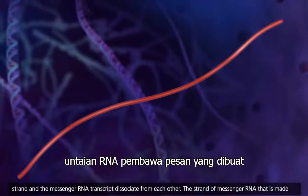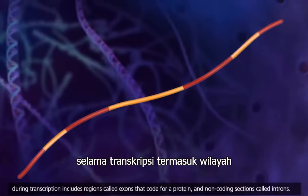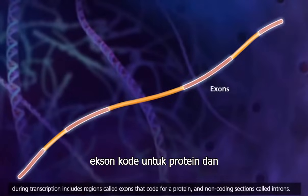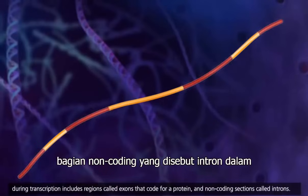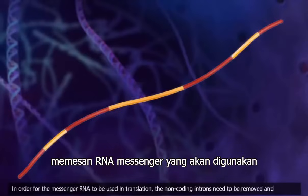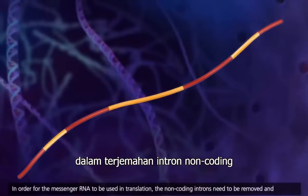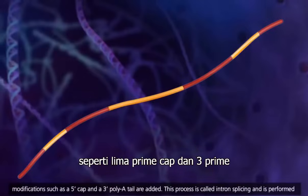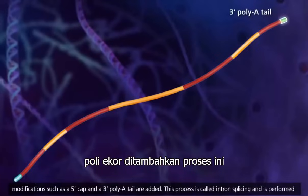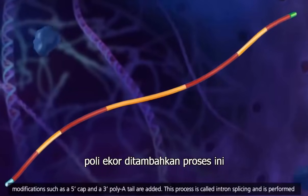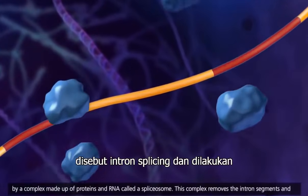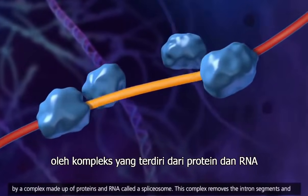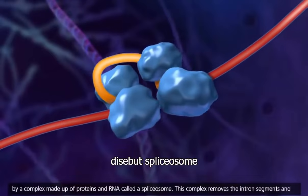The strand of messenger RNA that is made during transcription includes regions called exons that code for a protein, and non-coding sections called introns. In order for the messenger RNA to be used in translation, the non-coding introns need to be removed, and modifications such as a 5' cap and a 3' poly-A tail are added. This process is called intron splicing, and is performed by a complex made up of proteins and RNA called a spliceosome.